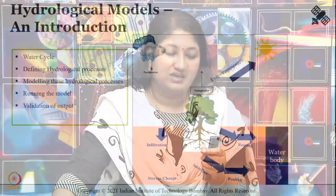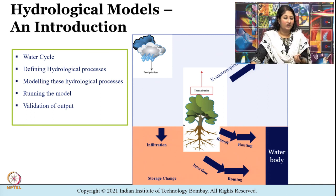Firstly, let us try to understand about hydrologic models — what they are, what they give us as output, and what their relevance is in hydrology. We will try to understand this through the water cycle, defining the underlying hydrological processes, modeling them, running the model, and validation of output.